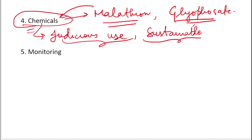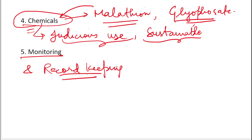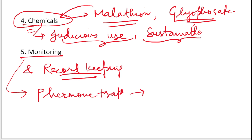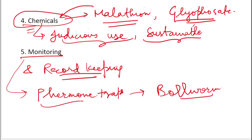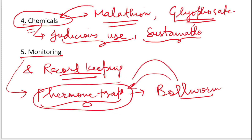We can also do monitoring and record keeping. We should do regular field inspections, visiting our fields at regular intervals to inspect the population of pests. If the pest population is growing too much to the point of causing damage, we control them through different methods. For example, we can use pheromone traps, which help in controlling and monitoring the activity of bollworms. If you see a lot of bollworms in pheromone traps, you can estimate the pest pressure in the field and use other methods for protection of the crops.